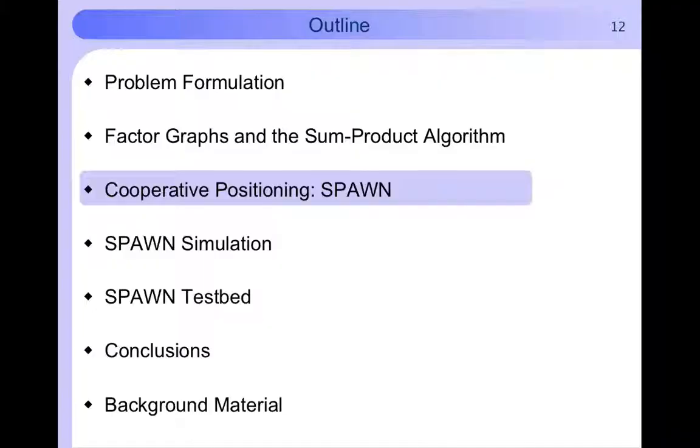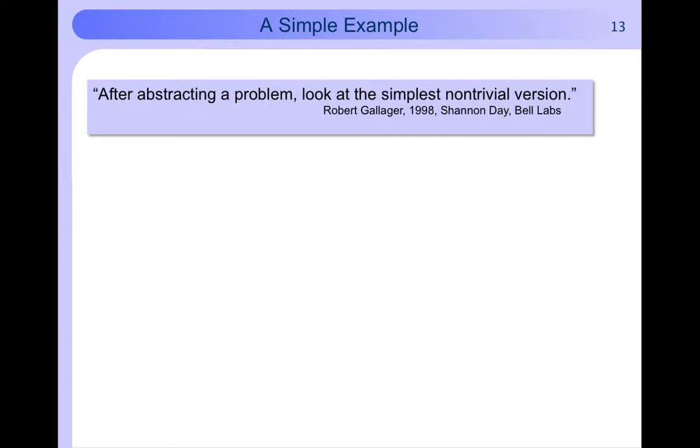Now that we understand factor graphs and the sum product algorithm, we can move on and understand SPAWN, the sum product algorithm on a wireless network. Rather than providing a full derivation, we consider the most simple non-trivial case, that is two-dimensional positioning of two agents.